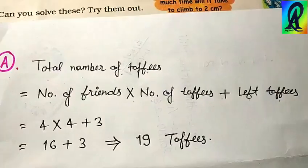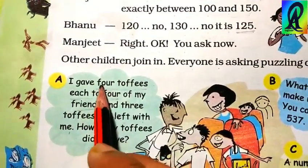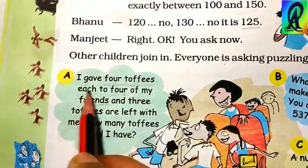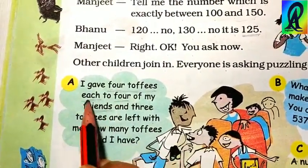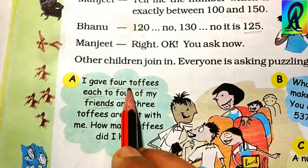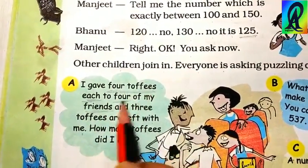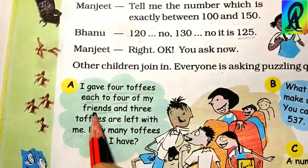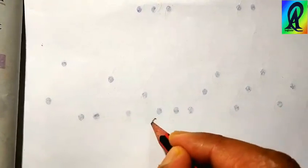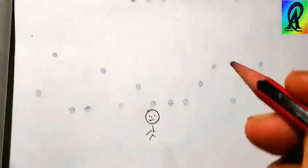Let me explain. There are 4 toffees for each of 4 friends: 4 toffees for the first friend, 4 for the second, 4 for the third, and 4 for the fourth. Think of it as: you have four friends and you give each one four toffees.